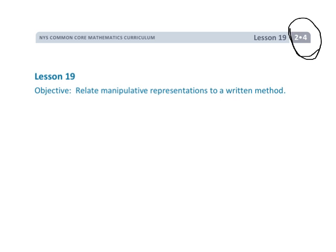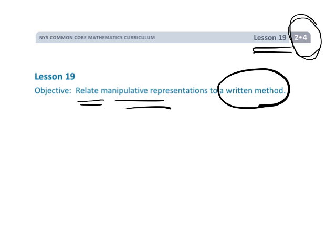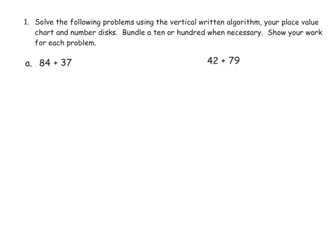This is grade 2, module 4, lesson 19, and we are going to be connecting our manipulatives to the official standard algorithm. All that work with the place value chart is now going to pay off with students using the official standard algorithm in this lesson. We are going to solve using the written standard algorithm, but we're also going to use the place value chart to make sure students are getting the answer right and see the connection between the algorithm and the place value chart.